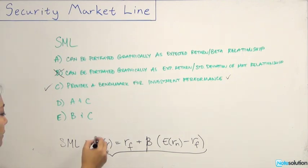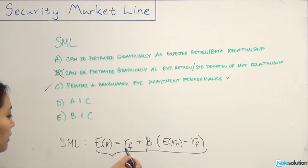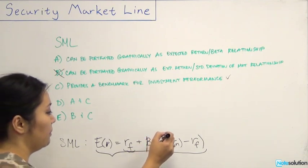So we have ER, which is the expected return. And it's dependent on the risk-free rate, which would be our intercept if we were to graph it, plus beta, which is the relationship to the market, times the market premium, market risk premium.